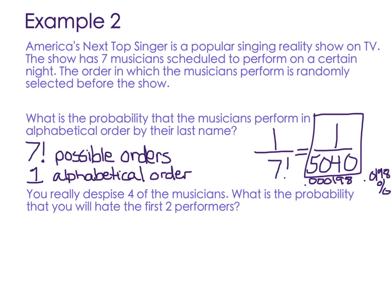Now, next one. You really despise four of the musicians. You just can't stand them. What is the probability that you will hate the first two performers? So now, order doesn't matter. It doesn't matter if you hate Joe and then Susie or Susie and then Joe. You still hate them both, right? So we're just looking at combinations. And of two musicians, we have seven to pick from, combinations of two at a time. So that's how many combinations we have of two performers. And then, if you think about all the performers, there are four of them that you hate. And so all the combinations of those four people, two at a time, would be 4C2.